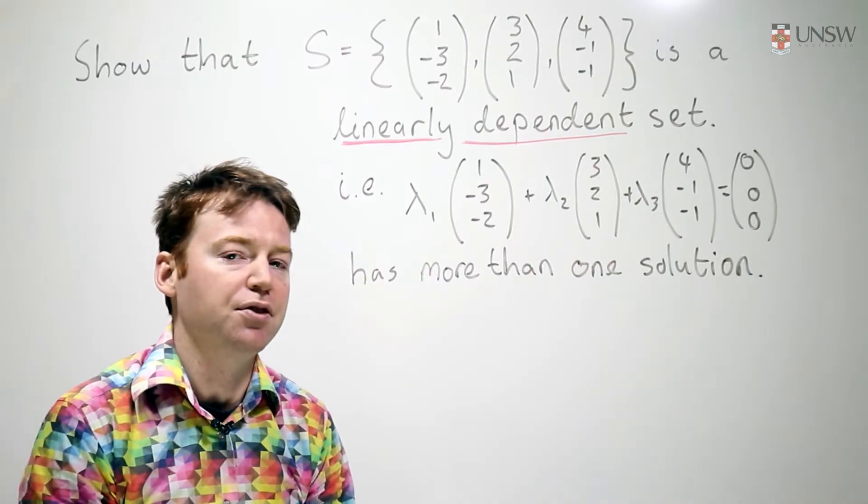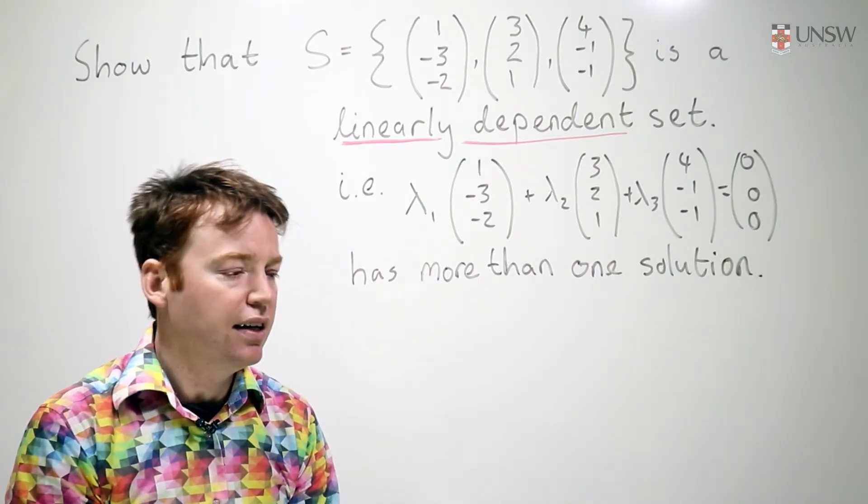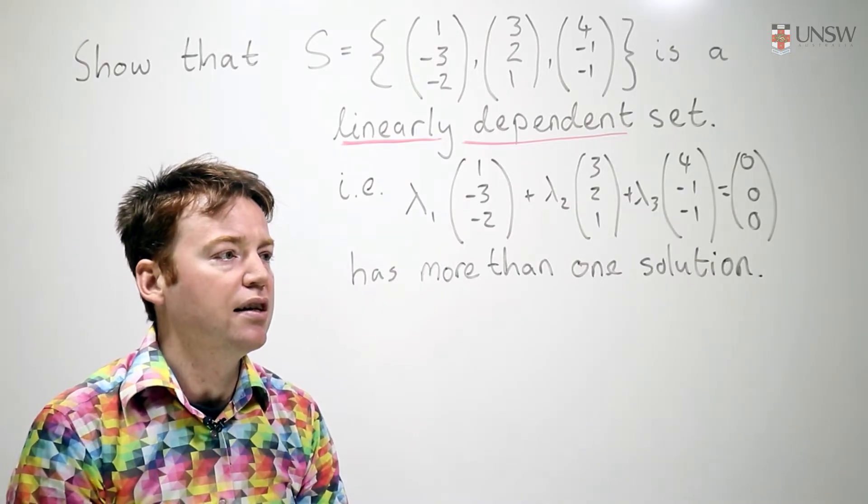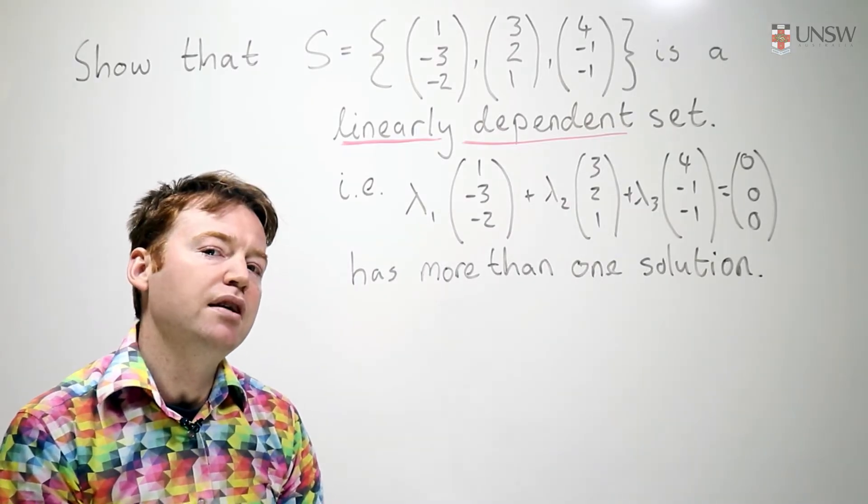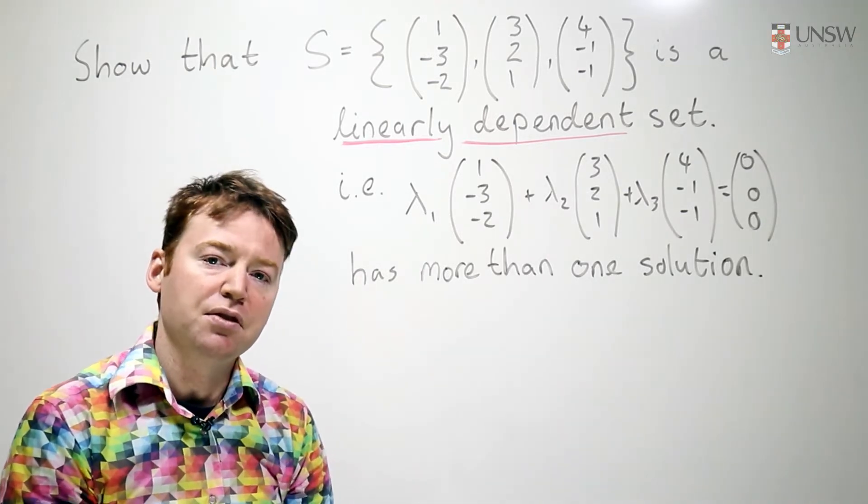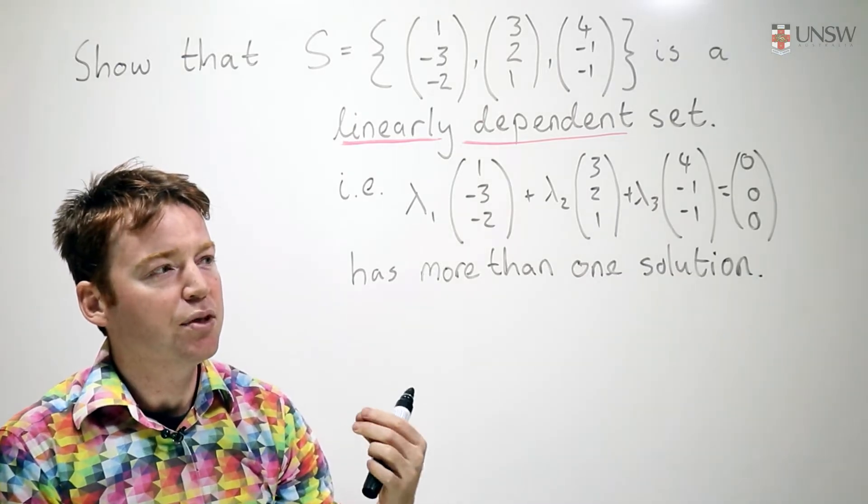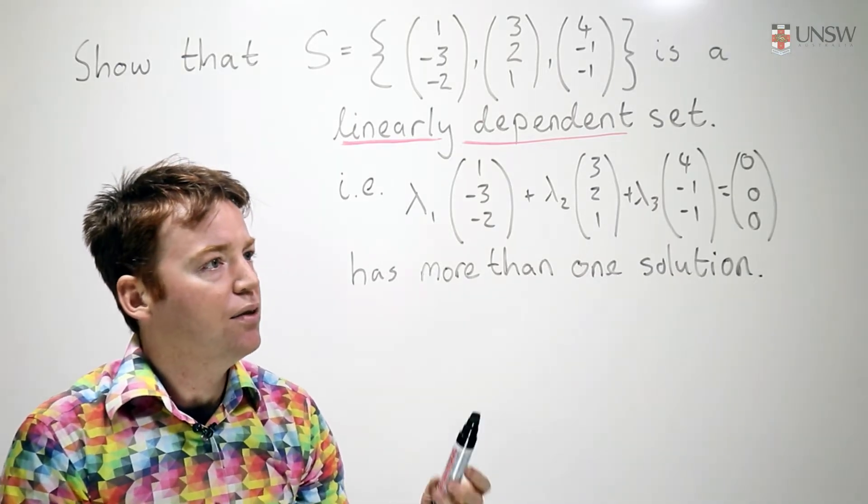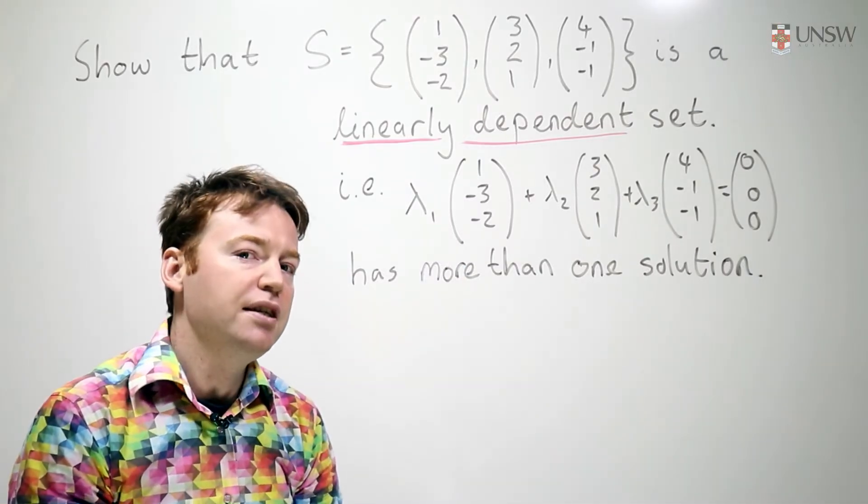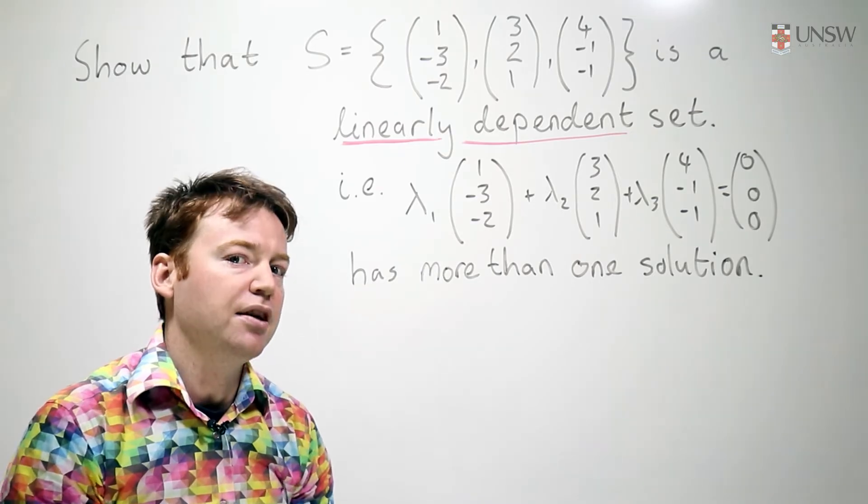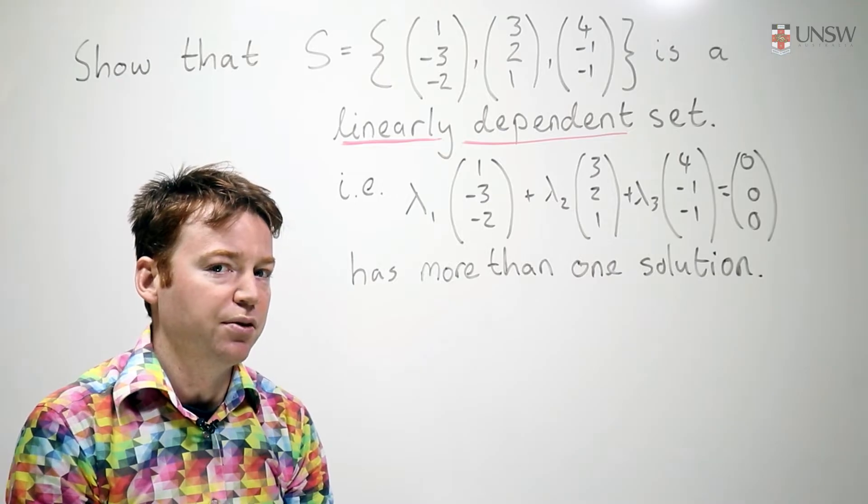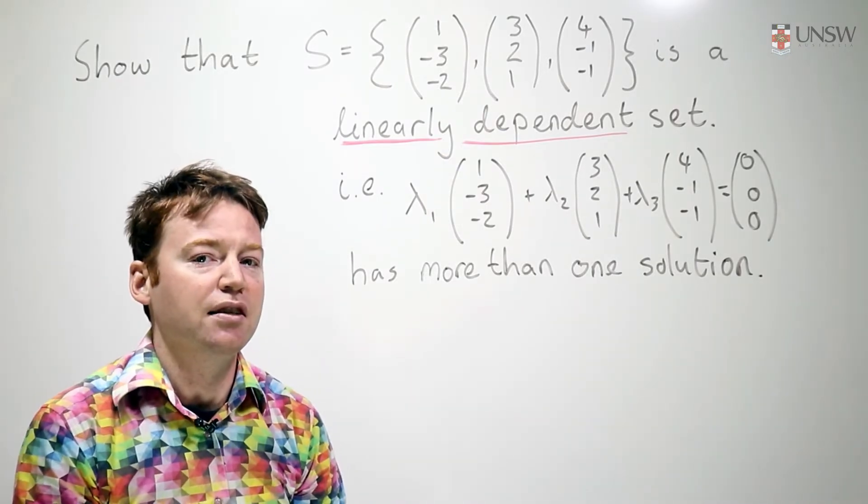Now in your textbook you have a definition of linear independence. It says that you take some linear combination of the vectors equal to zero and they are linearly dependent when the only solution is the solution where lambda 1, lambda 2 and lambda 3 is equal to zero. I'm going to slightly rephrase this. Let's say that they're linearly independent when this equation has a unique solution and they're going to be linearly dependent when there's more than one solution.